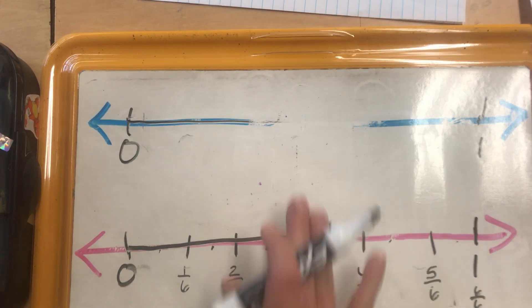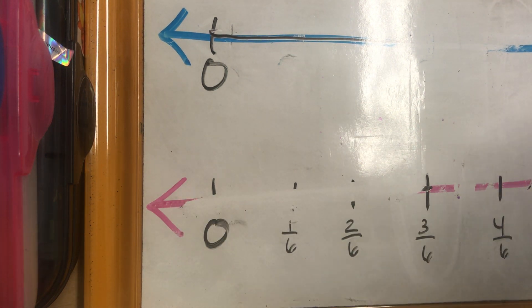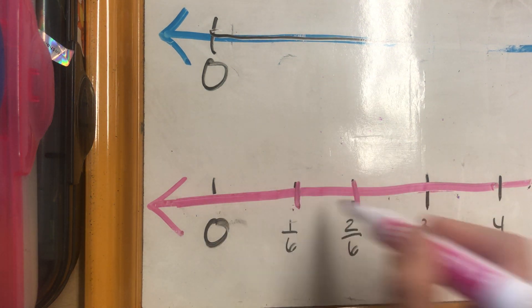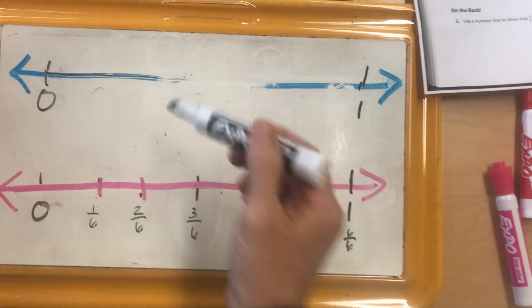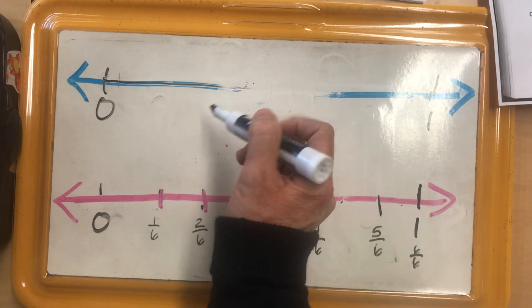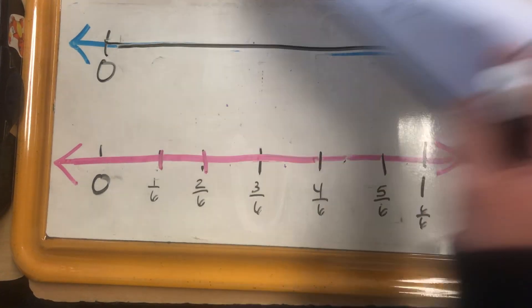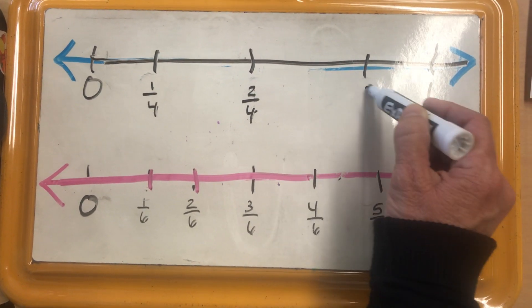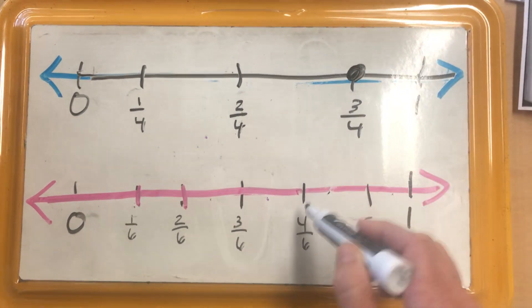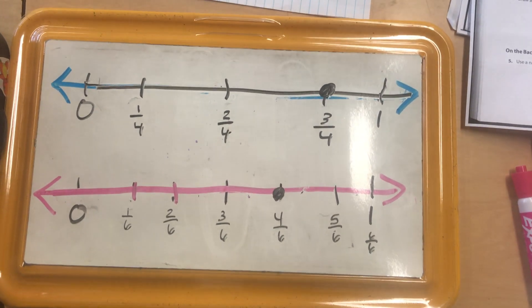On the back, show that four-sixths is NOT equivalent to three-fourths. Draw two number lines. For three-fourths, divide into four sections using three lines: 1/4, 2/4, 3/4. They want us to show that three-fourths is not the same as four-sixths. When you draw them, they are not lined up together, therefore they are not equivalent fractions. Good job, thank you, bye!